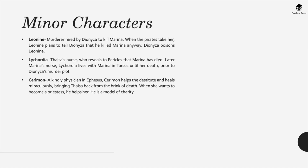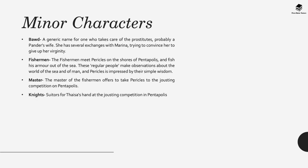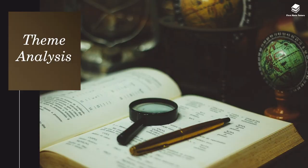Other minor characters include Leonine, a murderer hired by Dionysa to kill Marina; Lycordia, Thaisa's nurse; and Cerumen, a kindly physician in Ephesus. Philemon is Cerumen's assistant. Lysimachus is the governor of Mytilene who ultimately marries Marina. Pander is a generic name for someone who runs a brothel. There is also the Bawd, a generic name for one who manages prostitutes; the fishermen who help Pericles; the master of the fishermen; the knights who joust for Thaisa's hand; Bolt, a servant at the brothel; Diana, the goddess of chastity; the shipmaster; and various lords who advance the plot.